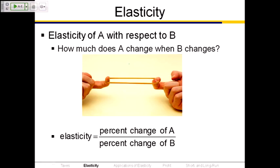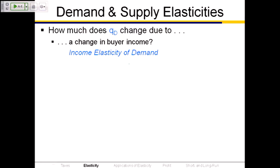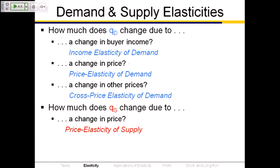There are a whole lot of different elasticities we could talk about; we're only going to talk about two, but let me show you four definitions. On the demand side: income elasticity of demand measures how much quantity demanded changes due to a change in buyer income — that's the percentage change in QD divided by the percentage change in income. Price elasticity of demand measures how much quantity demanded changes in response to a change in price. Cross-price elasticity of demand measures how much quantity demanded changes in response to a change in other prices. And price elasticity of supply measures how much quantity supplied changes due to a change in price.